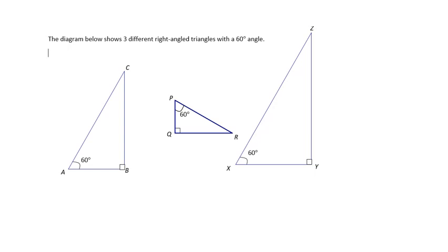We're going to use similar right triangles. First, we're going to measure all three sides of these three triangles — you can do this on your own in centimeters or inches. So we're going to measure each hypotenuse. This one was 6.4 centimeters. The hypotenuse is the side opposite the right angle.